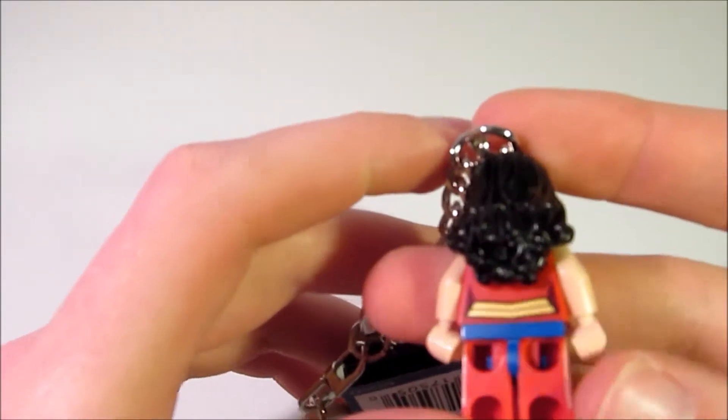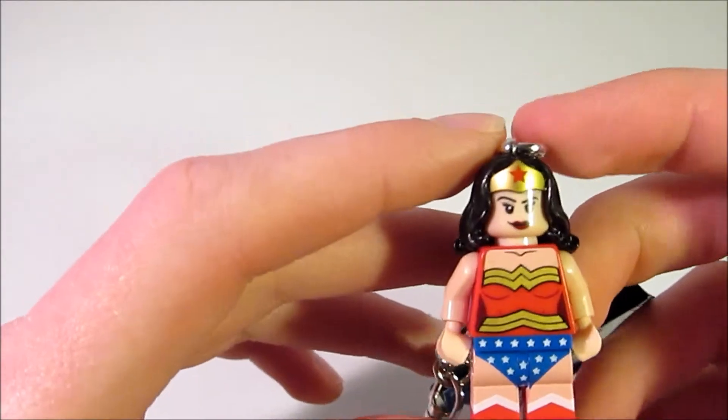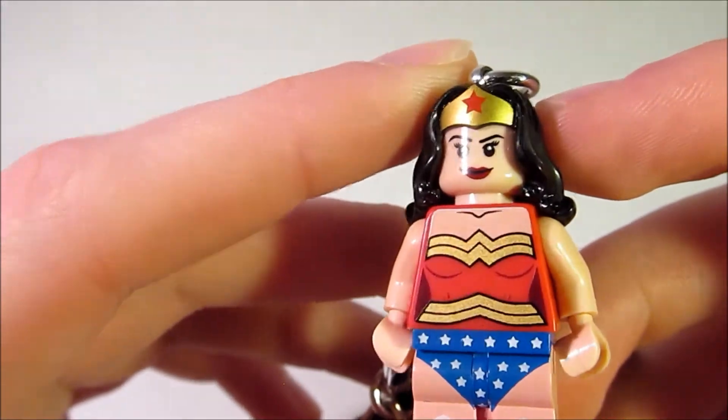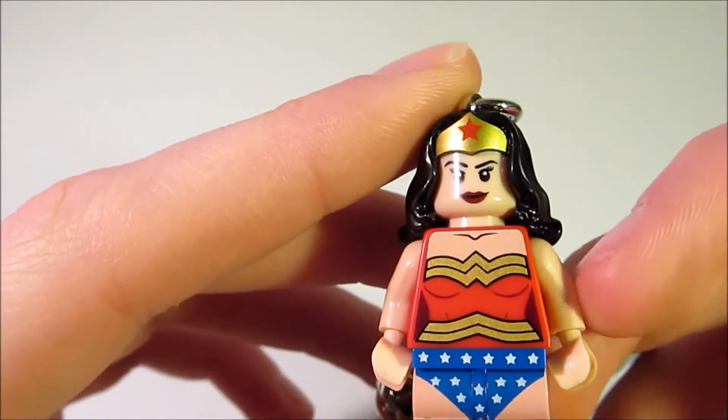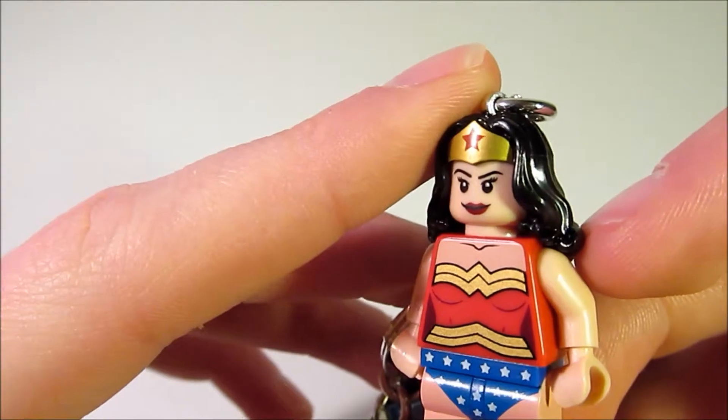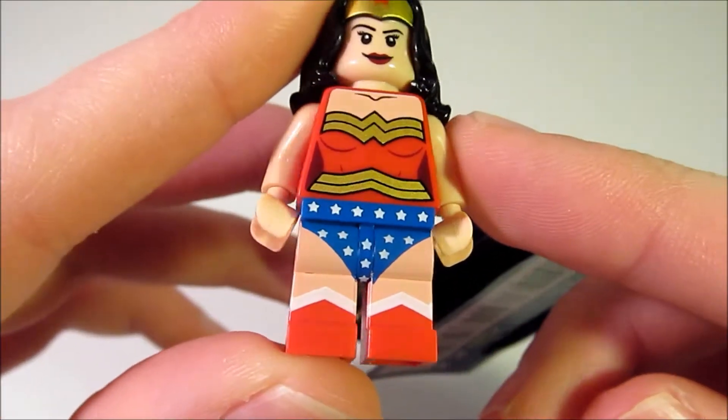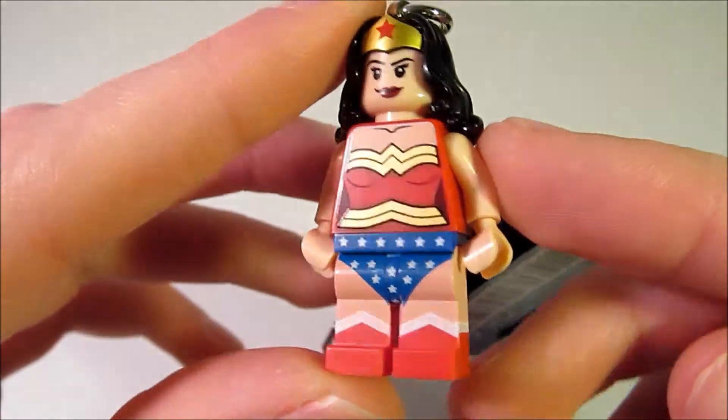And a little bit of printing on the back of her torso there. Let's look at the front though, she has her standard Wonder Woman crown, her torso is very nice, her signature is the curves of her body there, her neck, her suit, her signature spandex suit I guess you would call it, and her red boots.